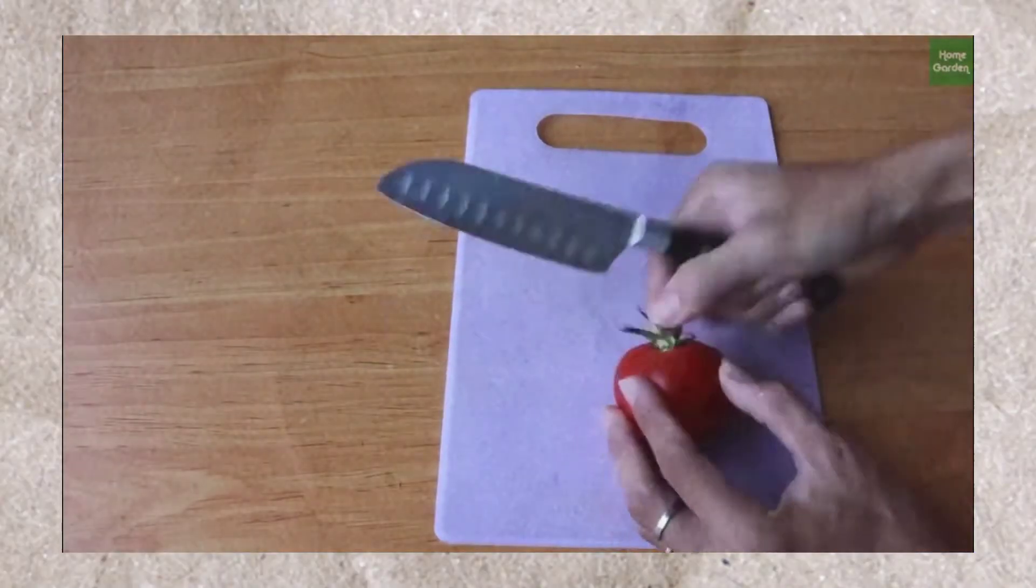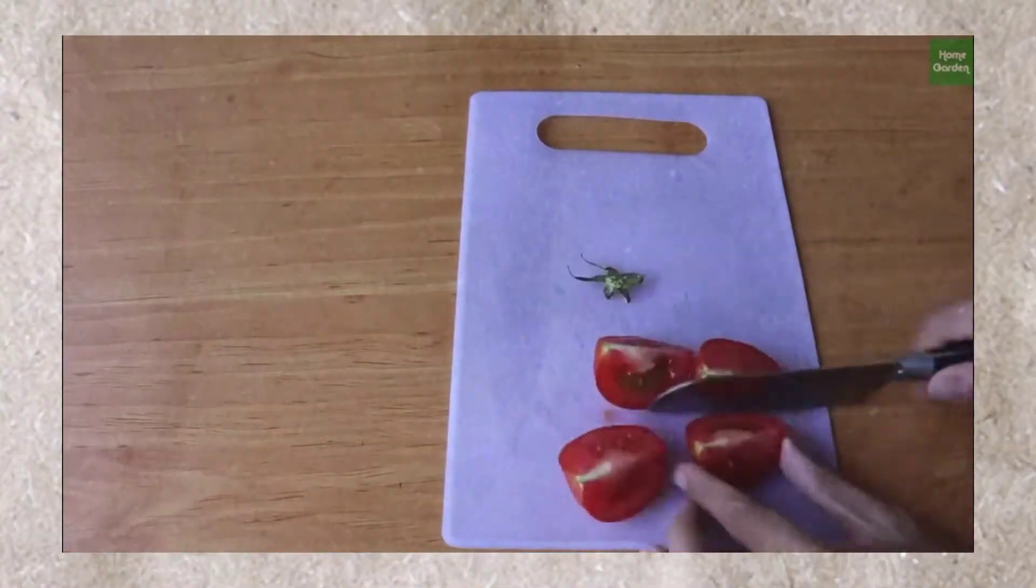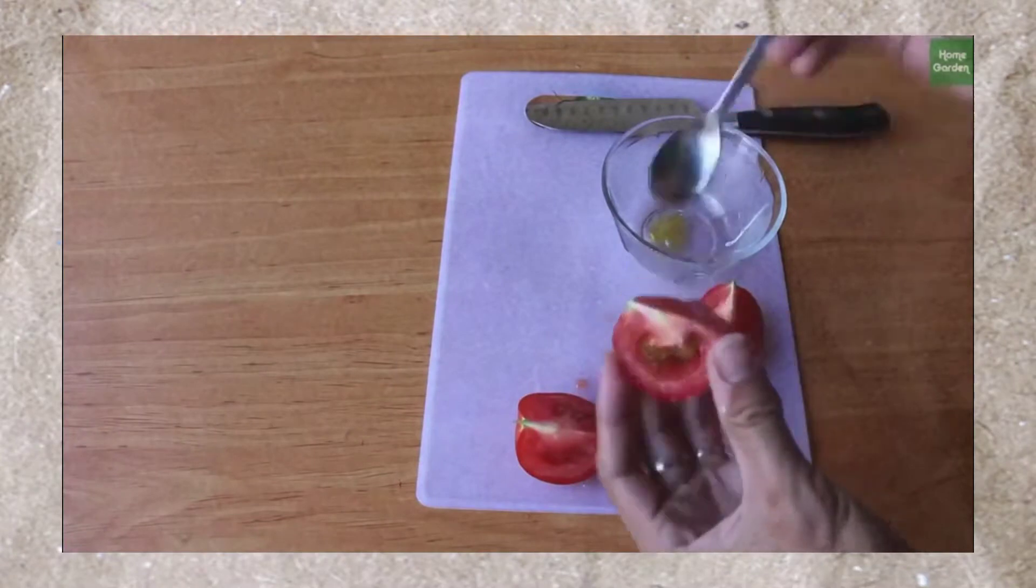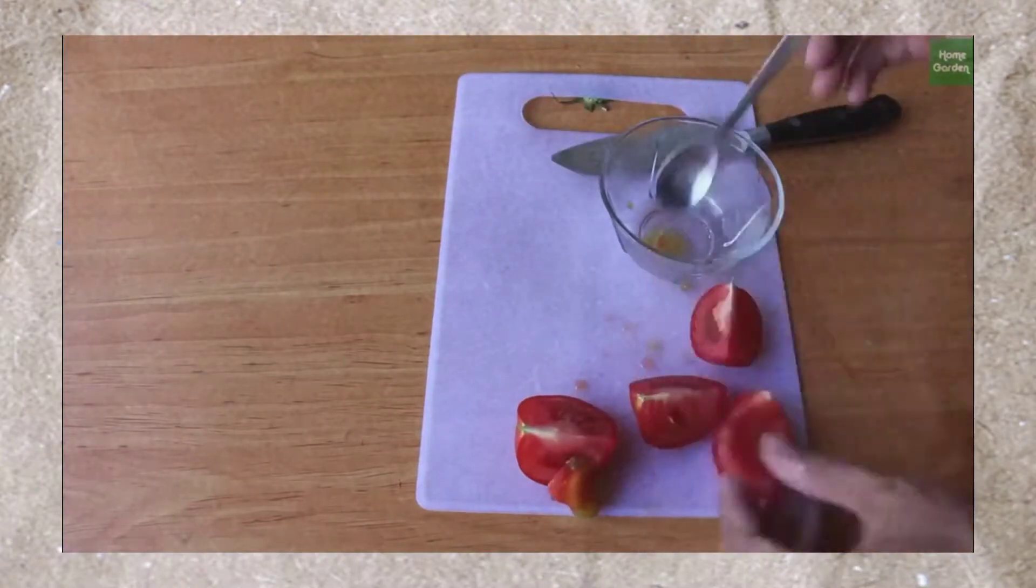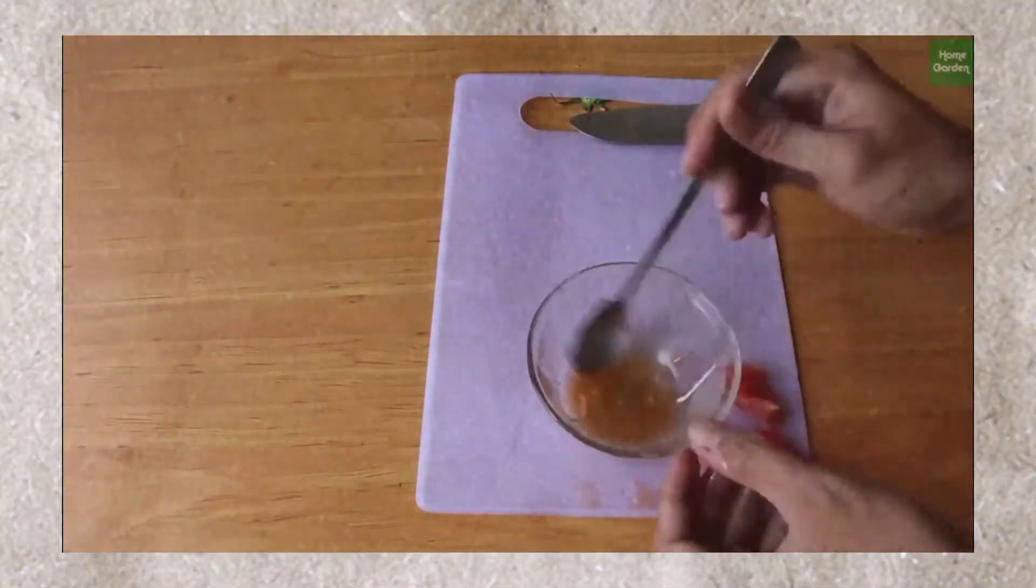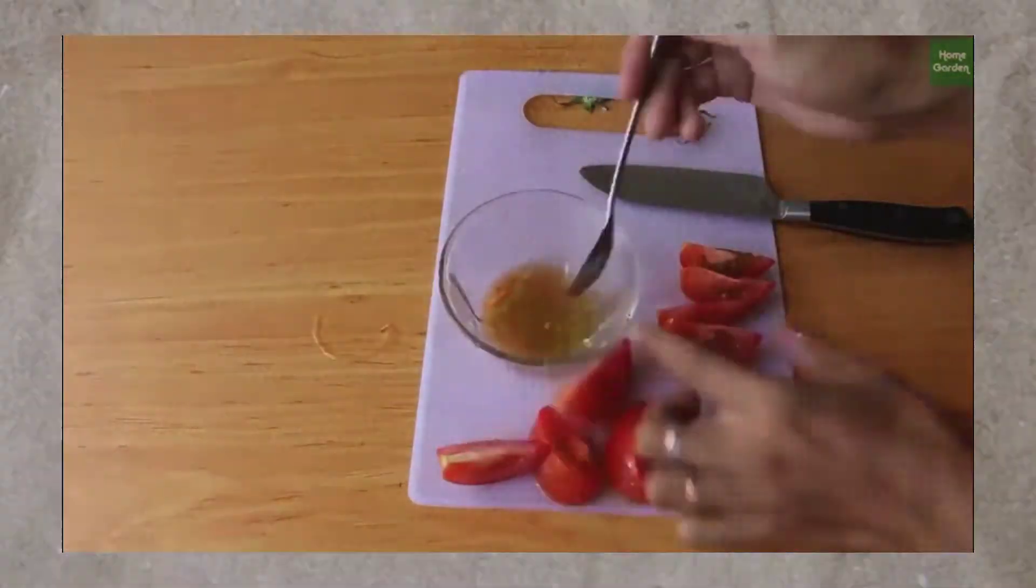Then prepare the tomatoes, slice the tomatoes into pieces, and take the seeds by using a spoon. Put the seeds in the bowl. Besides the seeds of tomatoes, you can also use the seeds of other plants such as chili and green beans.